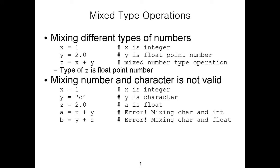If you define X as a string variable storing the character string 'ABC', then X is a string variable storing a string value. You need to be careful that some operations are not valid when mixing different types. You can add an integer with an integer, or an integer with a float, but it is illegal to add an integer to a string variable. You cannot mix a number and a character in arithmetic operations — you will get a syntax error if you do so.